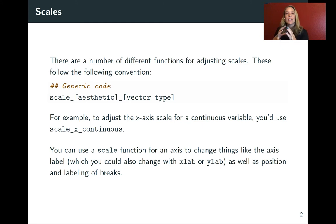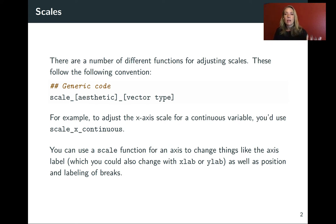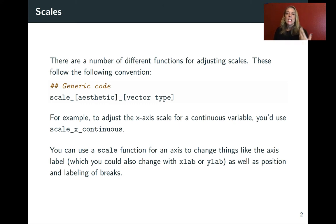We've already looked at one simple customization using scales, and that is to change the name. For the x and y-axis that changes the axis label, and for something like color or size it changes the label for the legend. You can use xlab, ylab, or the more general labs function for just the name, but if you want to do much more detailed changes you really need to go into these scale-type functions.